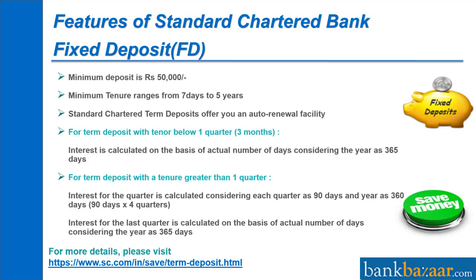Interest is calculated on the basis of actual number of days considering the year as 365 days for term deposits with tenure below one quarter (three months). For term deposits with a tenure greater than one quarter, interest for the quarter is calculated considering each quarter as 90 days and the year as 360 days (90 days into four quarters). Interest for the last quarter is calculated on the basis of actual number of days considering the year as 365 days.